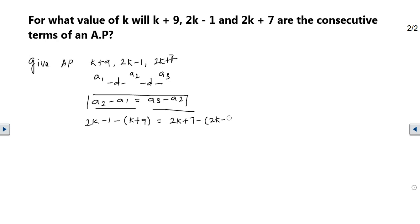Simplify this. 2k - 1 - k - 9. On the left, 2k - k is k, and -1 - 9 is -10. On the right, 2k + 7 - 2k + 1. The 2k terms cancel, and 7 + 1 is 8.